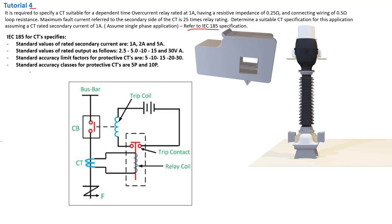The next standard we have is the accuracy class. We have two of them: 5P and 10P. These represent the margins of error. So if you say 1,000 times 10, and it's a 5P class, it will be within plus or minus 5%. If it's a 10P class, it will be within plus or minus 10% of your CT value. That's basically what these standard values mean, and you must be mindful of this when selecting your current transformer.